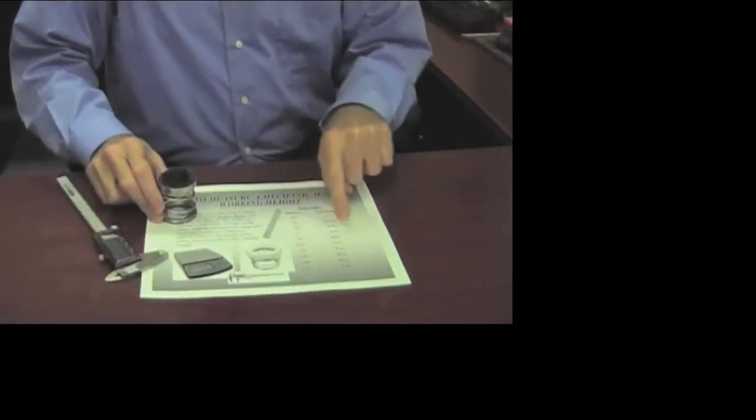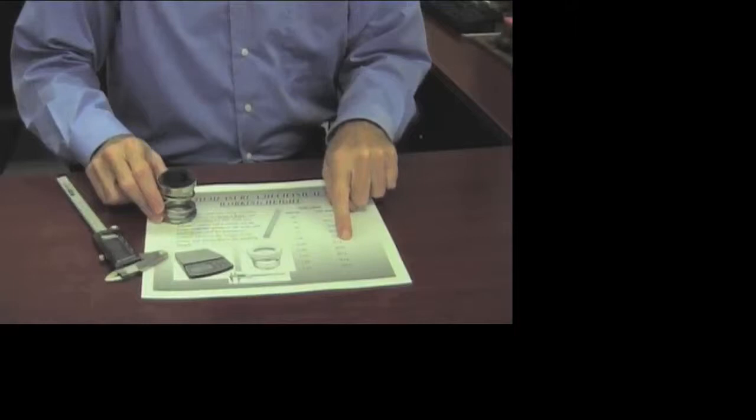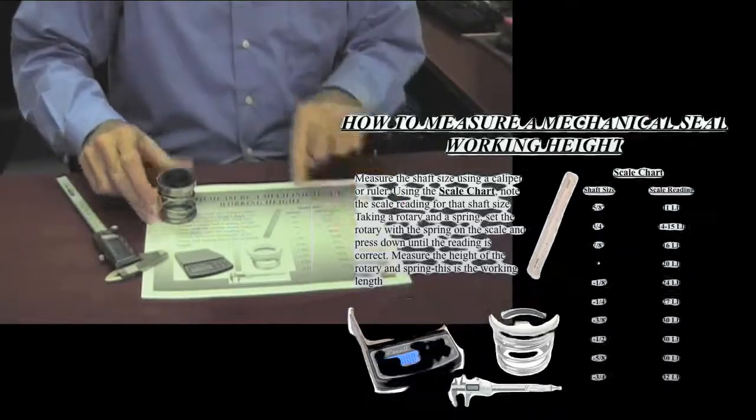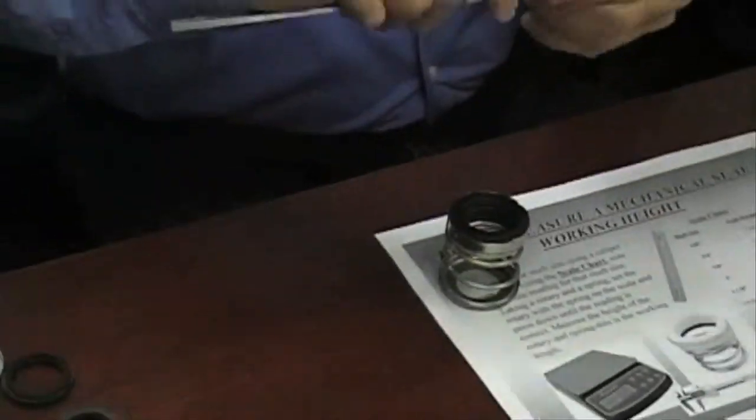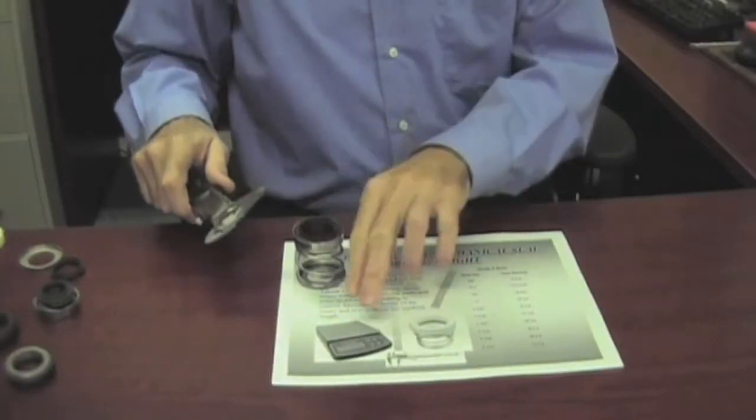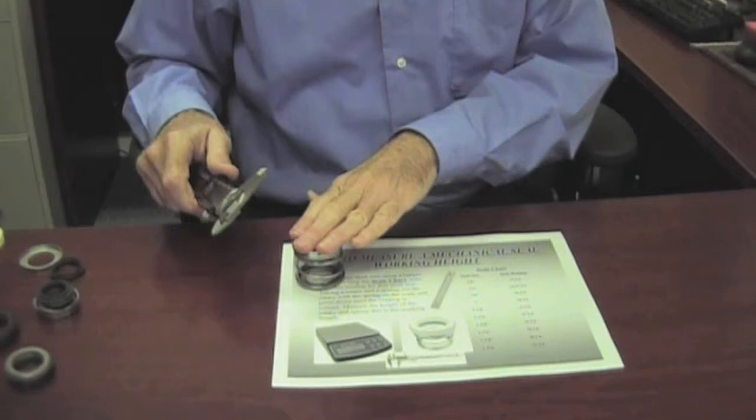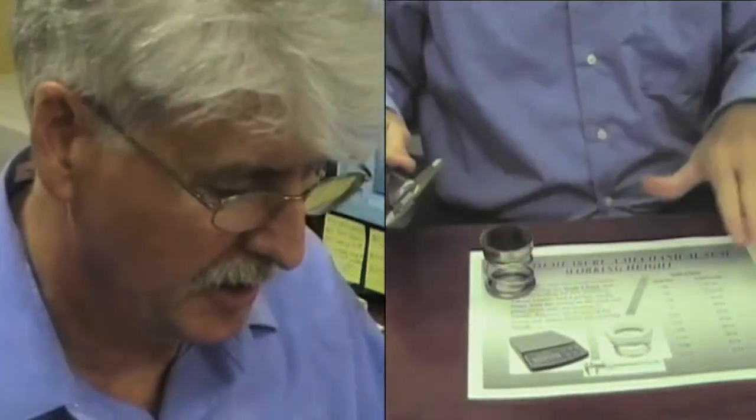Each shaft size has an approximate poundage that it takes in order to achieve the proper load on the seal. We do that by having a scale—bathroom scale, UPS scale. We are going to compress this seal down until it hits the proper poundage and take a measurement of it.